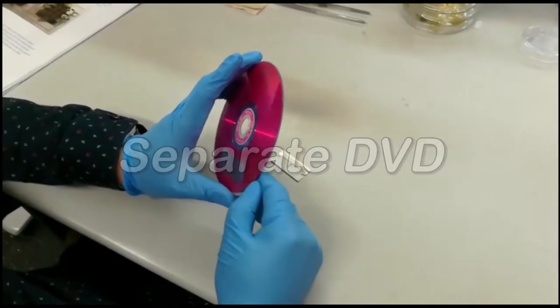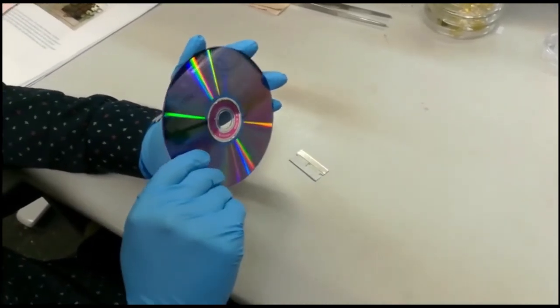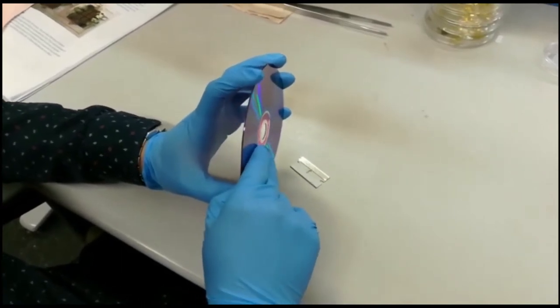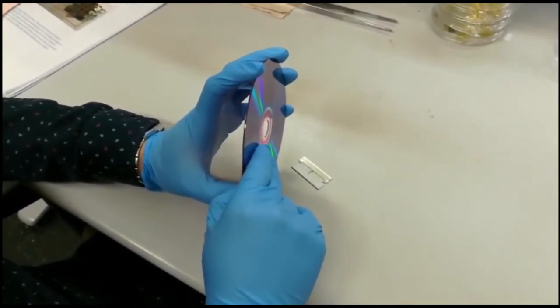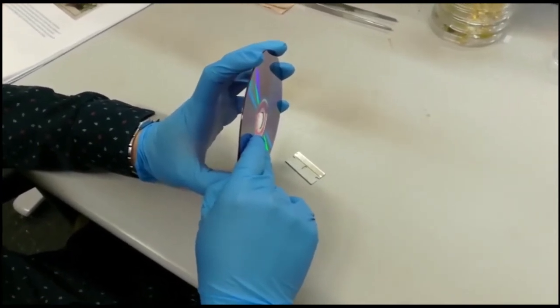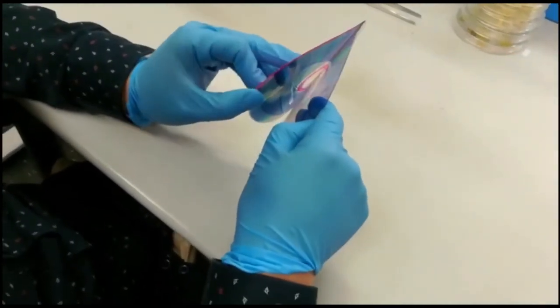This DVD already has a grating structure. As you can see, it's very colorful. Now we want to split this DVD disc and replicate this grating structure to PDMS using soft lithography.